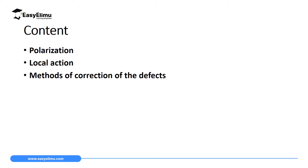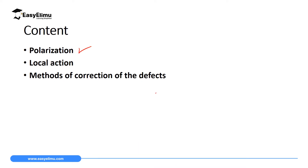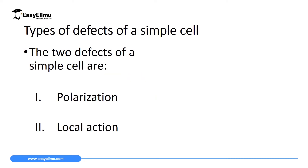By the end of this lesson you should be able to explain the defect called polarization and how to correct it, discuss local action as a defect of a simple cell, and discuss methods of correcting both defects. We have two defects: polarization and local action. Local action is caused at the anode where electrons lost from the zinc electrode are gained by hydrogen from the acid to produce hydrogen gas, which insulates the copper electrode, giving us polarization.